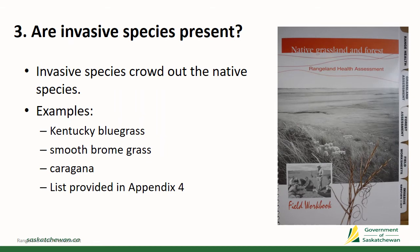Question three asks: are invasive species present? Invasive species will crowd out our native vegetation. Some examples of invasive species you might find in a grazed forest pasture include Kentucky bluegrass, smooth brome, some of the clovers, and possibly caragana. To help with this question, you can find a more complete list in appendix four of the workbook.